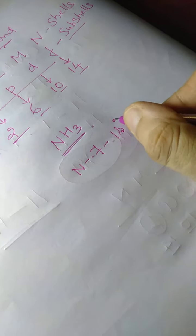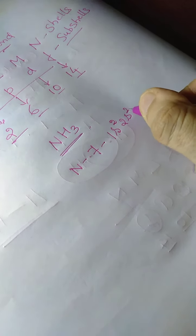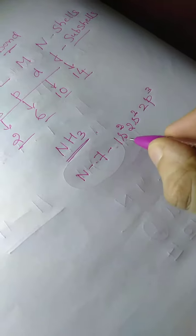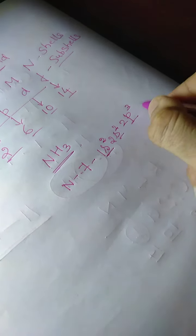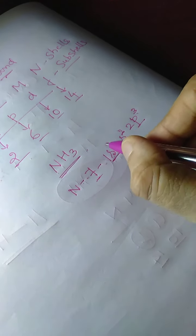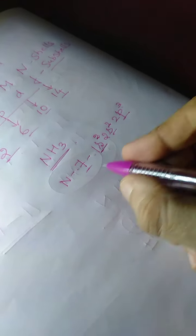The electronic configuration of nitrogen is 1S2, 2S2, 2P3. The S sub-shell can accommodate 2 electrons. P can accommodate a maximum of 6, but here the atomic number is 7, so we have 5, 6, 7.